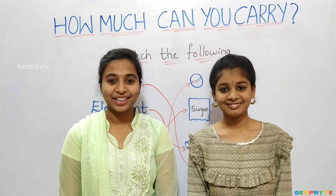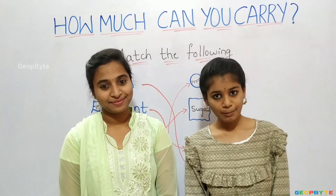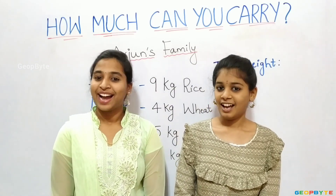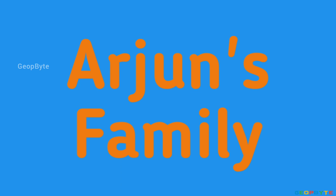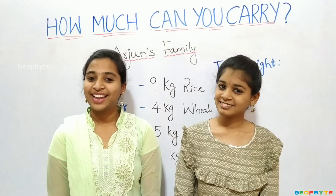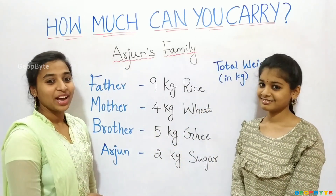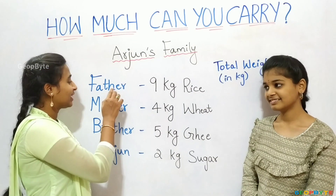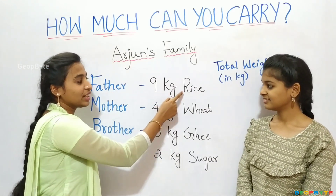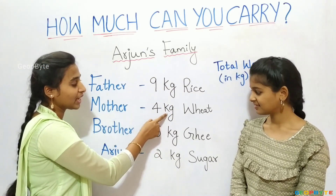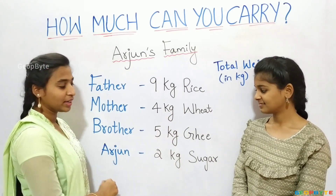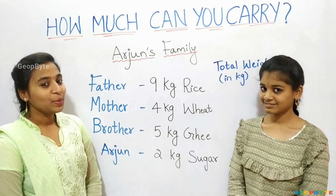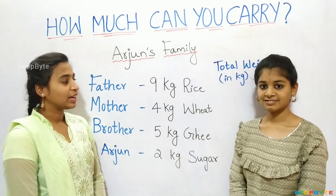Now we have completely understood the topic: Match the following. Now, let us get into the topic: Arjun's family. Hey kids, see here. We have Arjun's family members, let us go one by one. Arjun's father bought 9 kg rice, Arjun's mother bought 4 kg wheat, Arjun's brother bought 5 kg ghee, and Arjun bought 2 kg sugar. Now, let us calculate and write the total weight of the items.